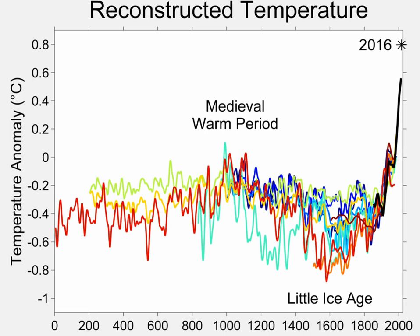It has been conventionally defined as a period extending from the 16th to the 19th centuries, but some experts prefer an alternative timespan from about 1300 to about 1850. The NASA Earth Observatory notes three particularly cold intervals: one beginning about 1650, another about 1770, and the last in 1850, all separated by intervals of slight warming.